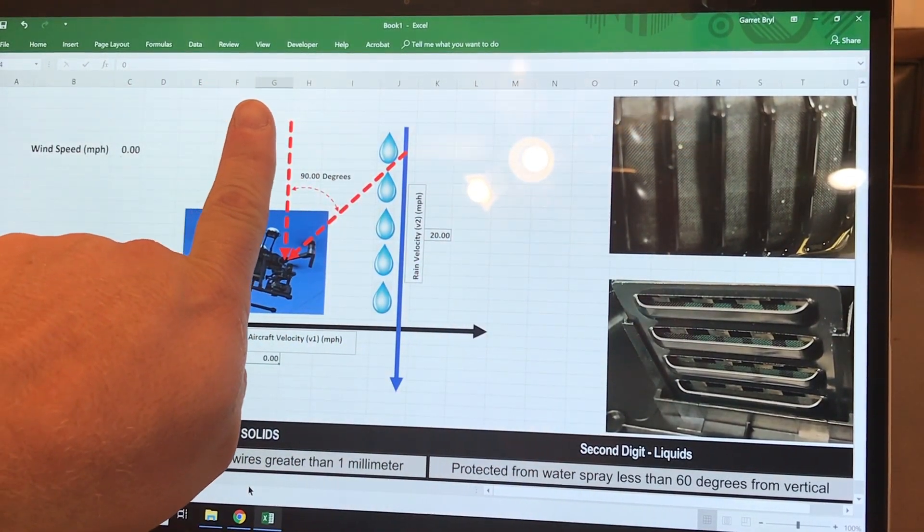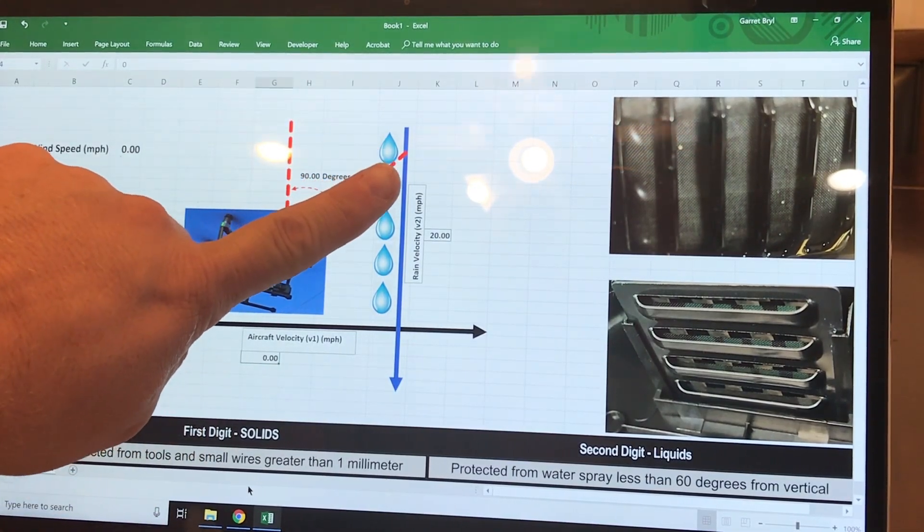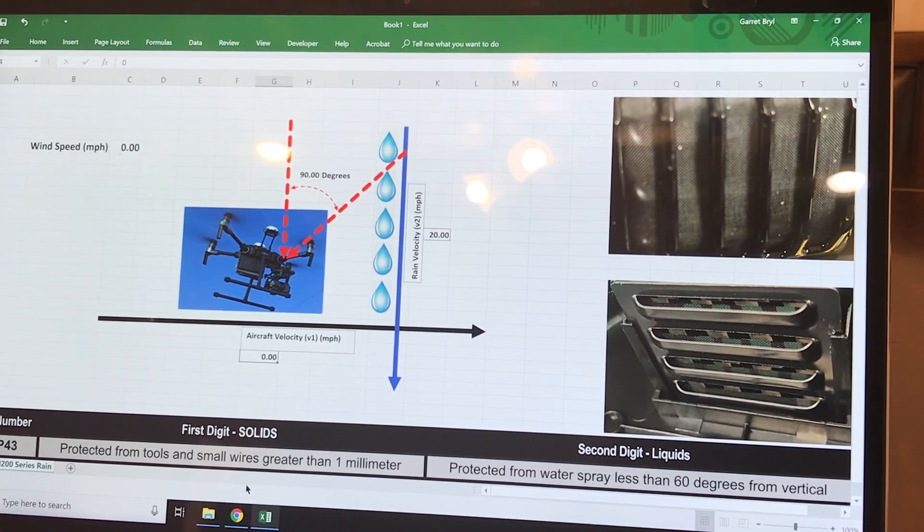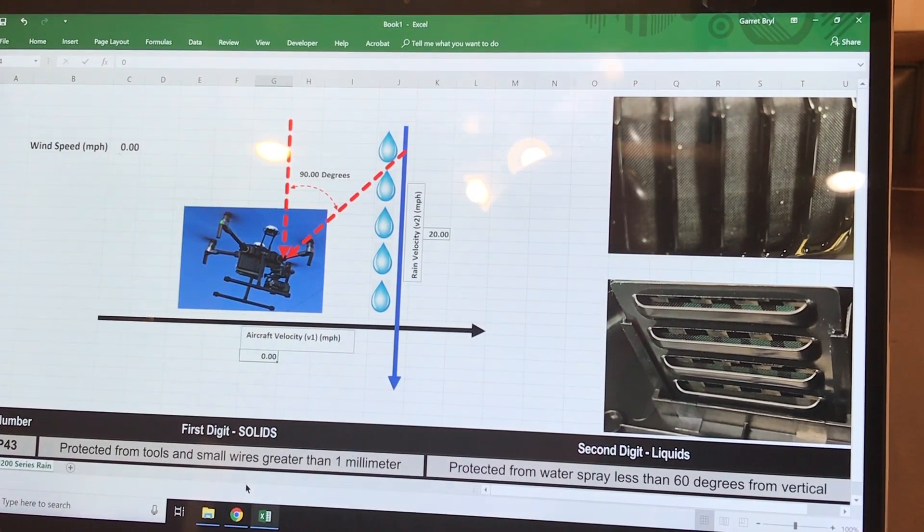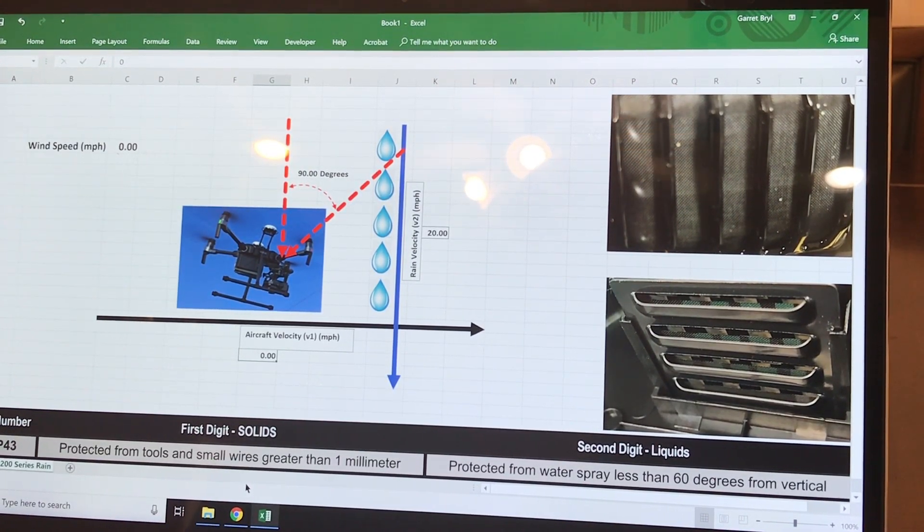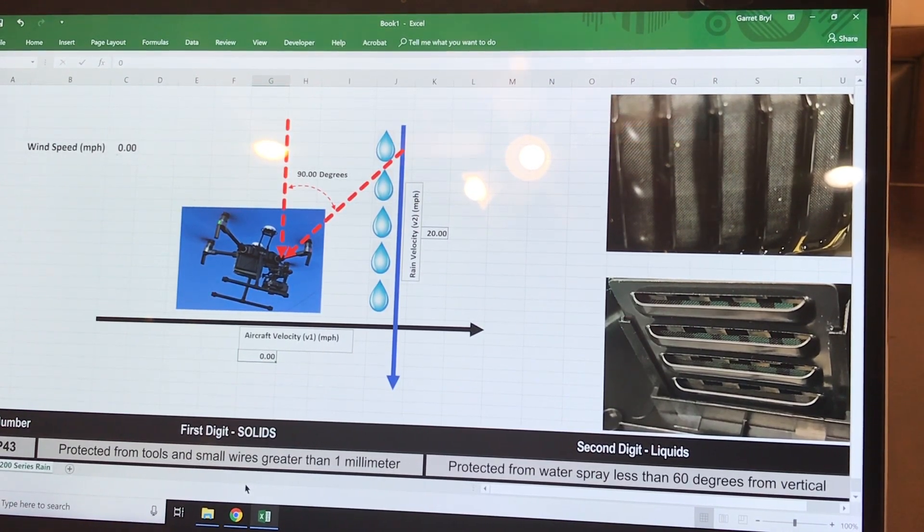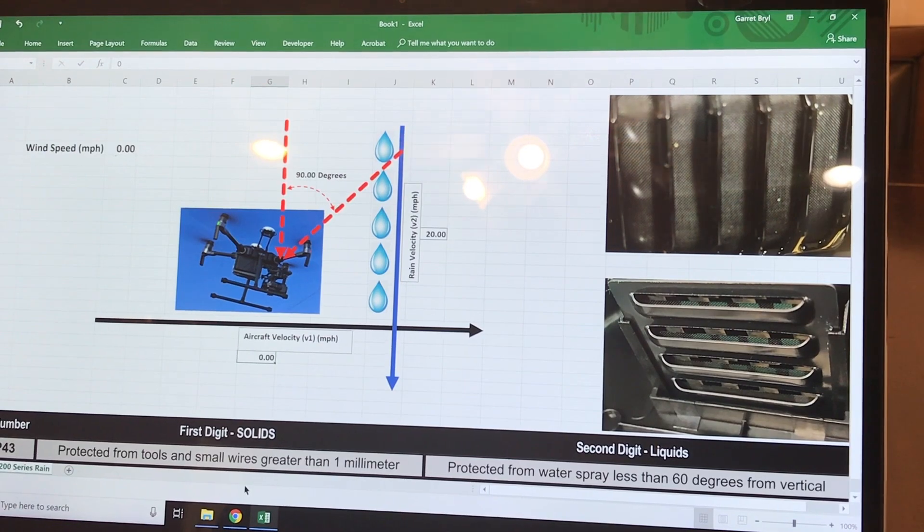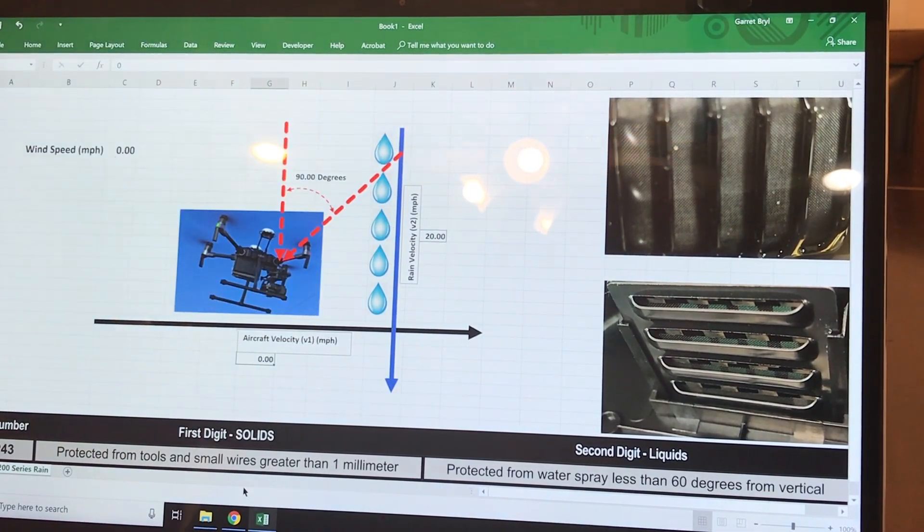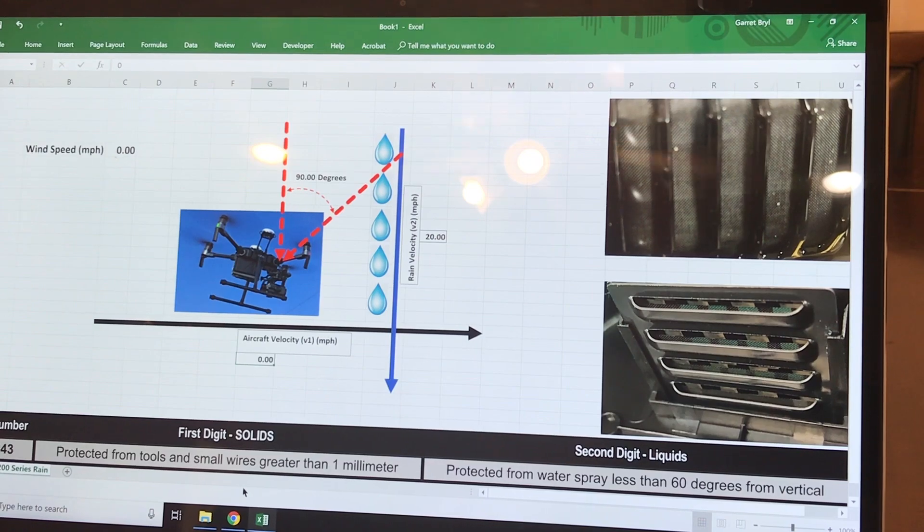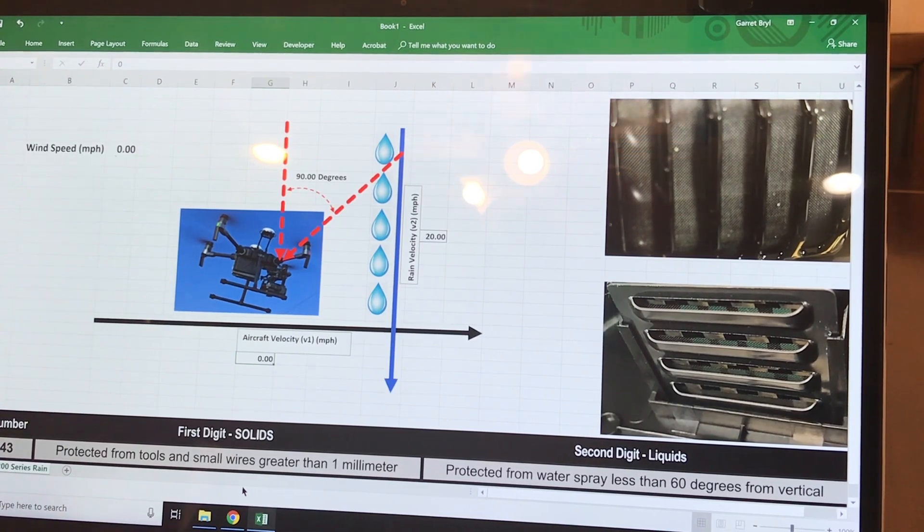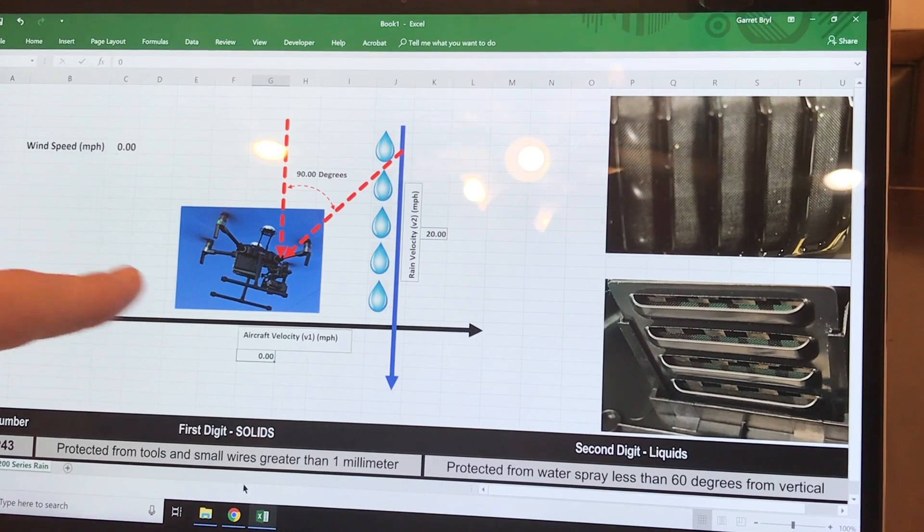Here's what we have: IP rating is 60 degrees from vertical, so vertical would be 90 degrees, 60 degrees from it would be down here at 30 degrees. Now anybody that's driven a car in the rain understands that as you increase speed, the angle that the raindrop hits the windshield also changes - it's no longer coming straight down, it comes at a much sharper angle. It's the same thing here. That's what we need to know: how do we calculate, how do we attribute that 60 degrees from vertical to some kind of speed of the aircraft?